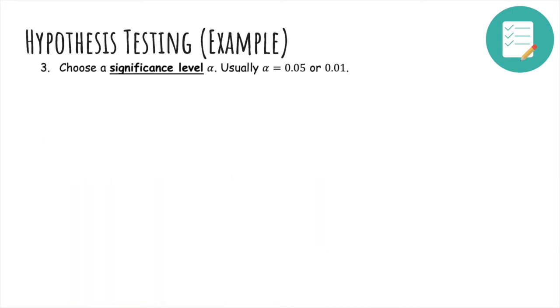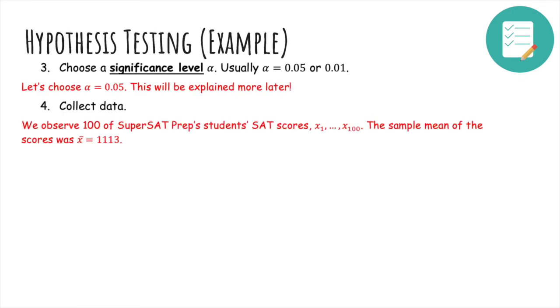So now we'll choose a significance level α, and it's usually 0.05 or 0.01. Let's choose 0.05 and explain this later. The next thing we do is collect data. So we're going to observe 100 students from SuperSAT Prep, X₁ through X₁₀₀. And it turns out the sample mean of the scores is x̄, which is 1113.